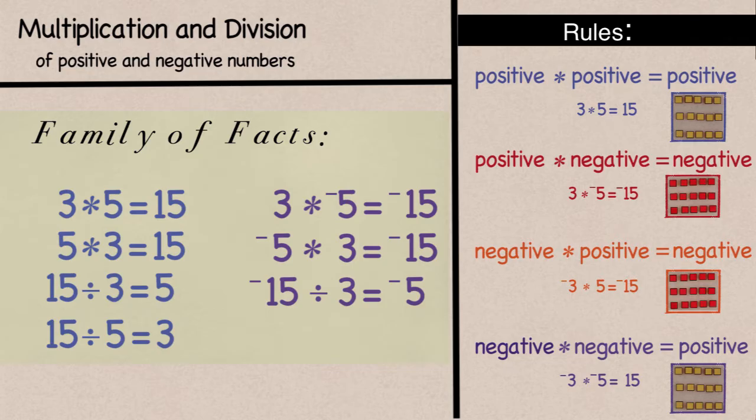When we have a negative and we divide it by a positive, we get a negative. The last one would be negative 15 divided by negative 5 is positive 3. And again, just like with multiplication, in division, when we divide a negative by a negative, we get a positive answer.